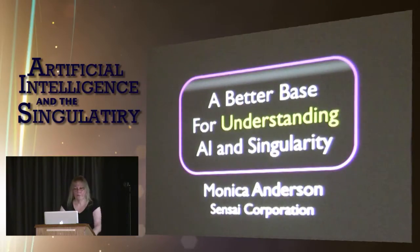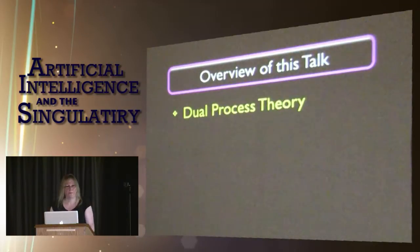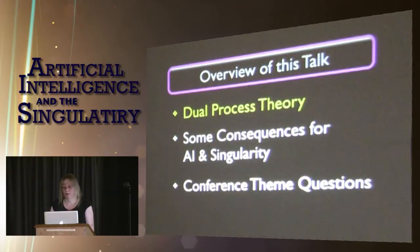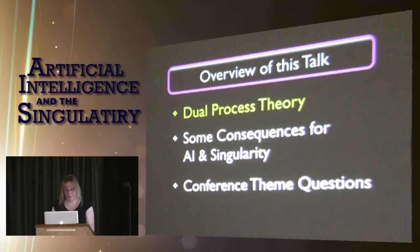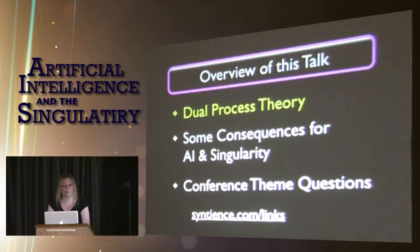Quick overview of this talk: I'm going to be talking about something called dual process theory. I'll discuss some consequences for AI and the singularity. I have about 40 minutes, so I'm going to go through the conference theme questions at the end. This is a very short talk — if you want more, go to my website, syntiens.com, which has a links page with all my published materials.